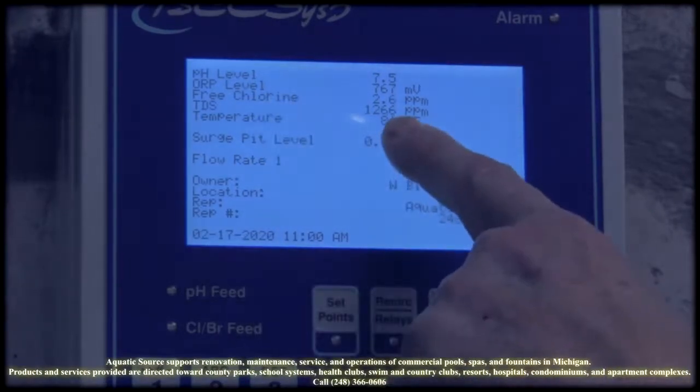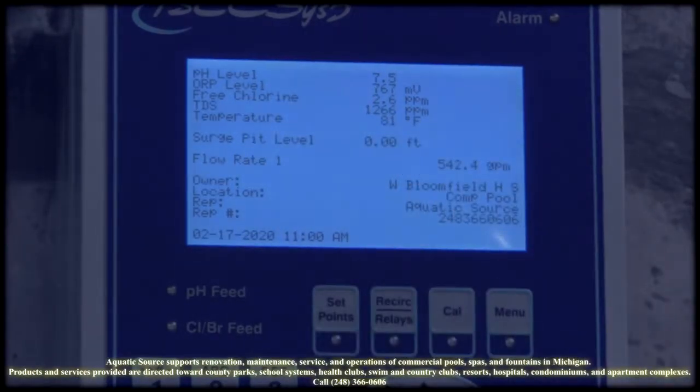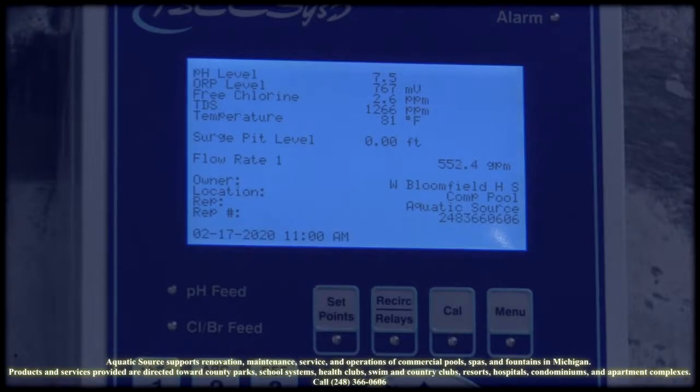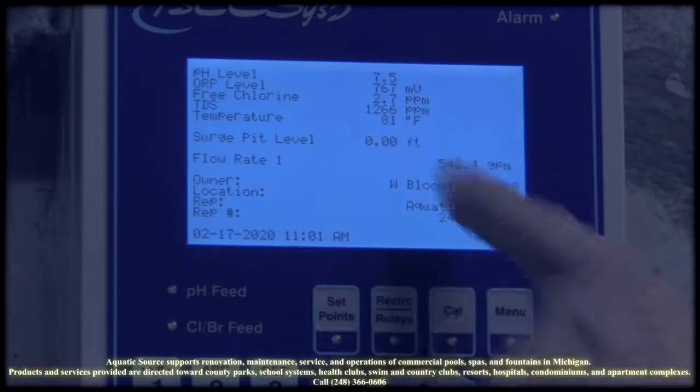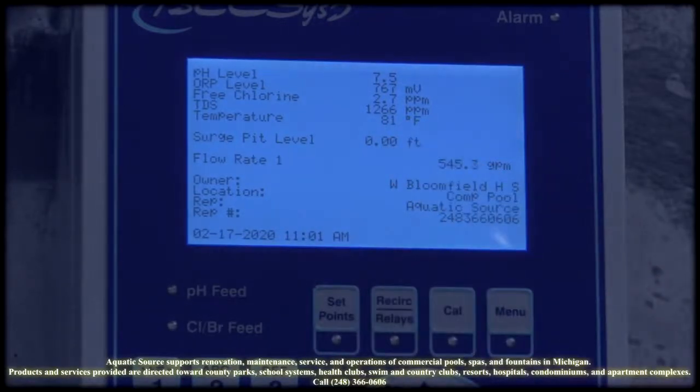We have total dissolved solids on this one is 1286. We want to keep it somewhere around that 1500. We also have a surge pit level. If the surge tank, for some reason, starts to overflow from a power or pump shutdown, it will actually send an alarm through the ethernet to the operator's phone, either a text or an email.